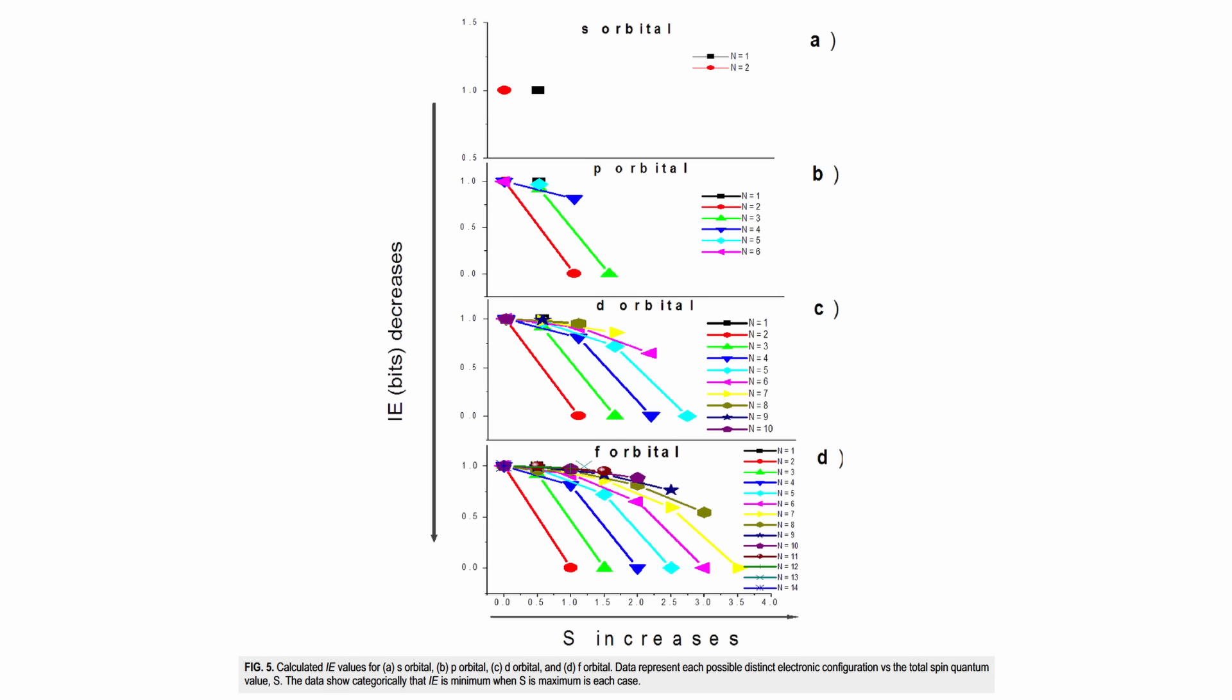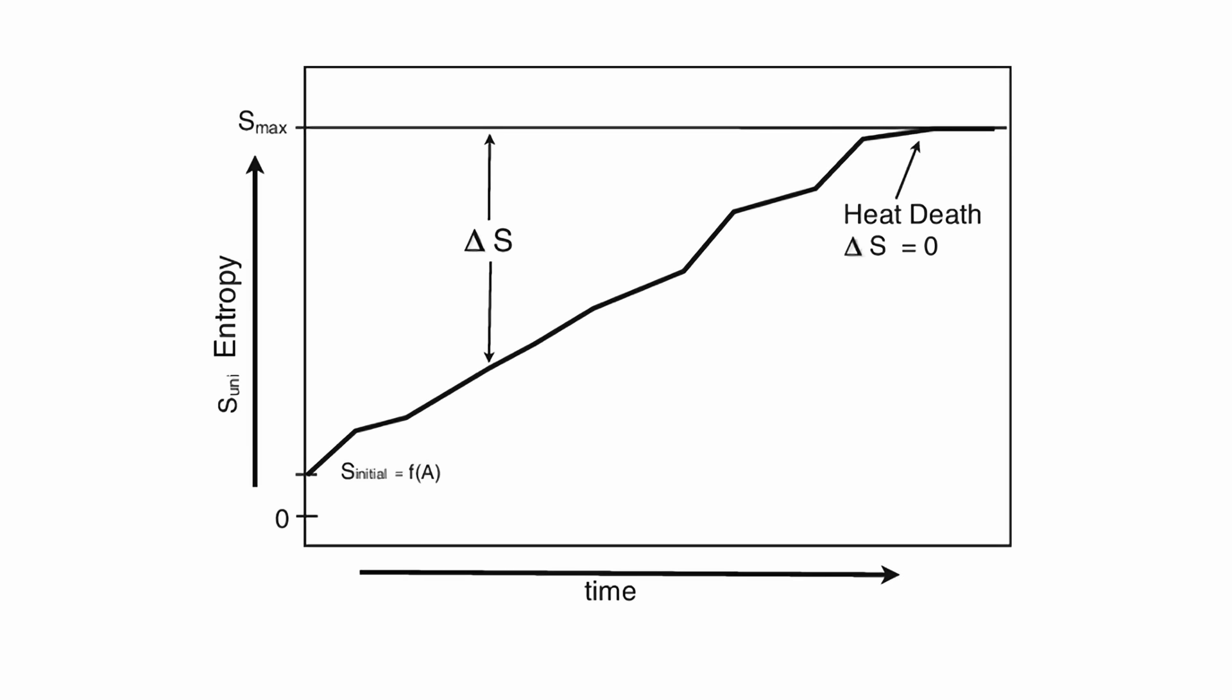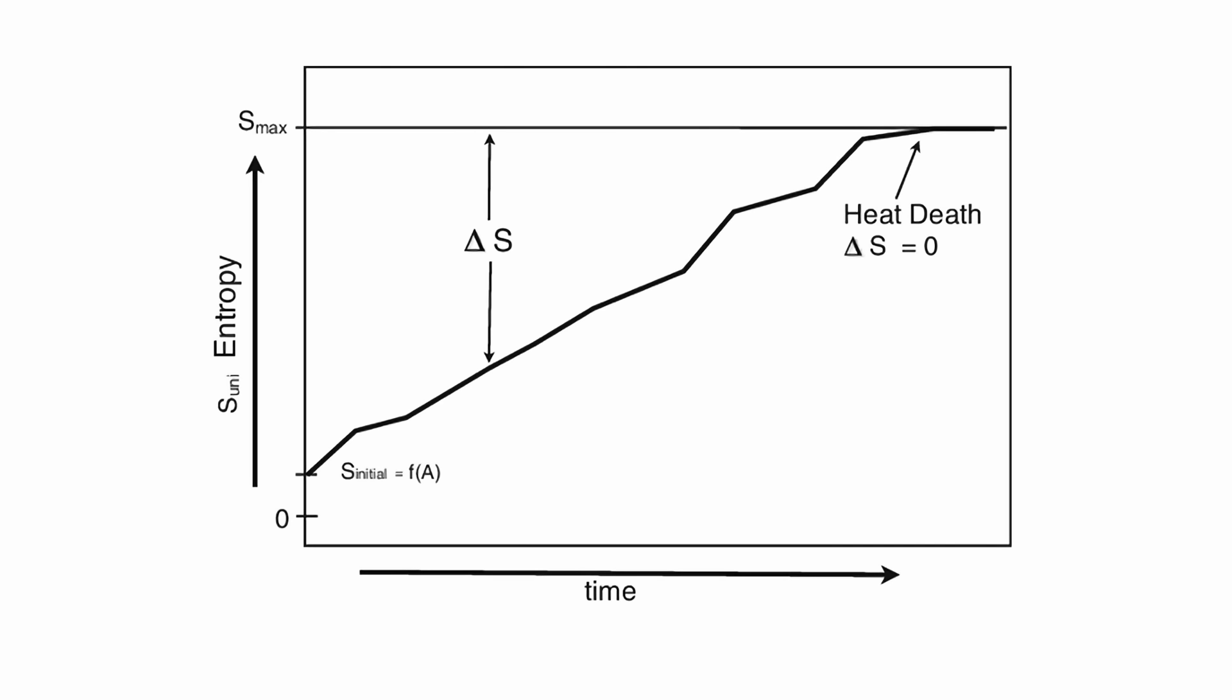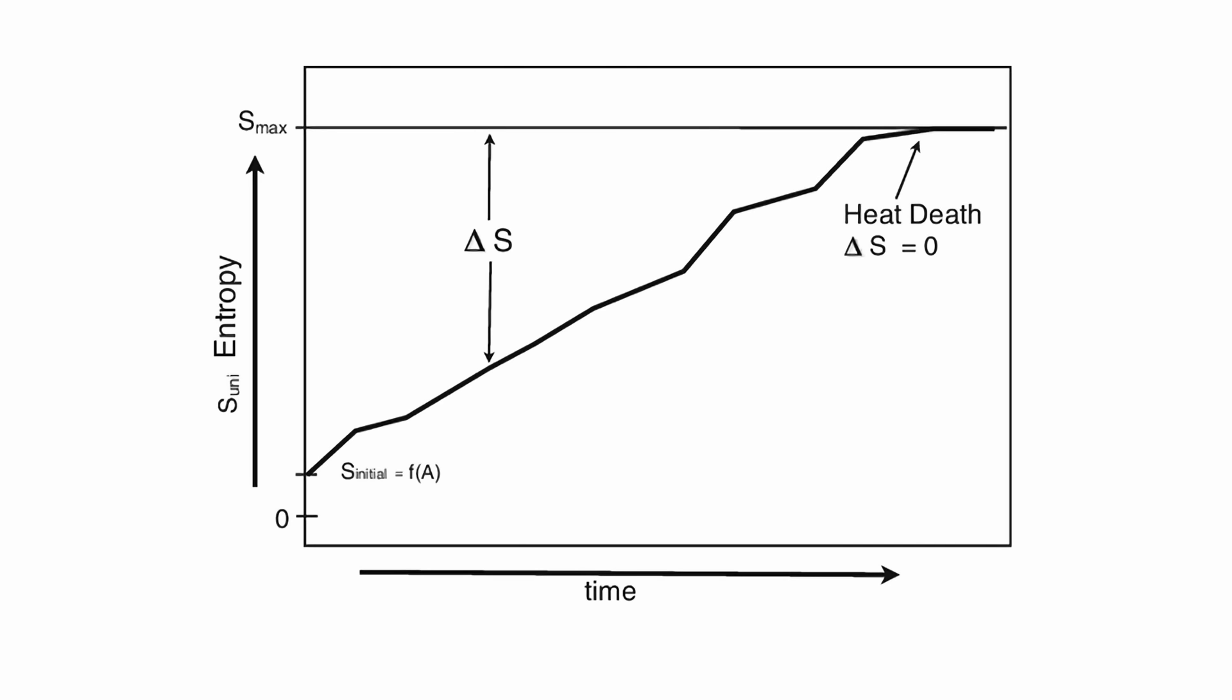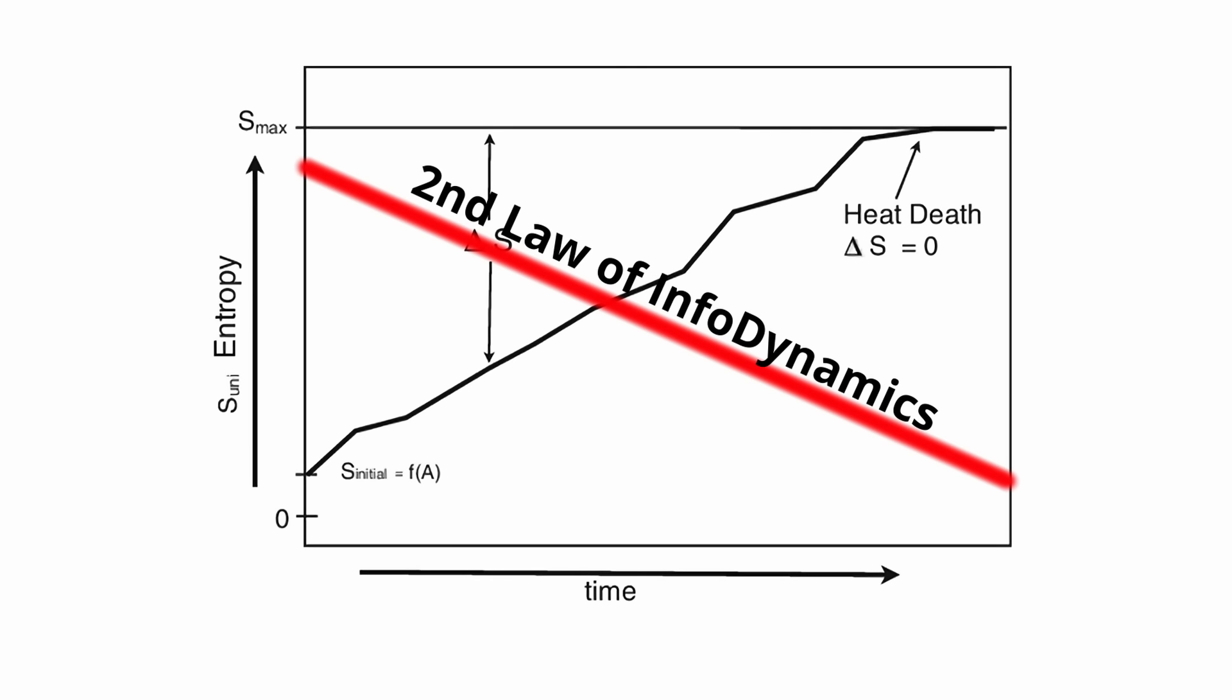A more prominent question then is why, if the second law of information dynamics holds, do we witness systems organizing themselves into states with minimal data? If the second law of thermodynamics tells us that systems tend to disorder, yet we observe systems striving for the lowest data state, does this not suggest a hierarchical system and an energy flow?